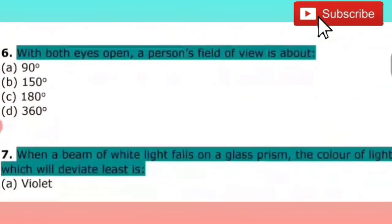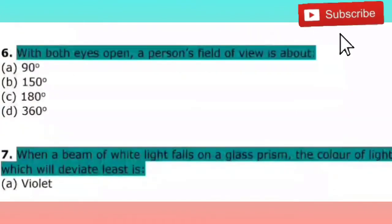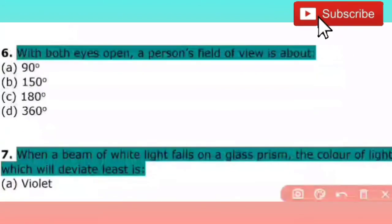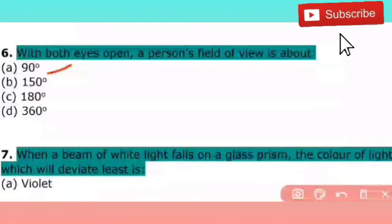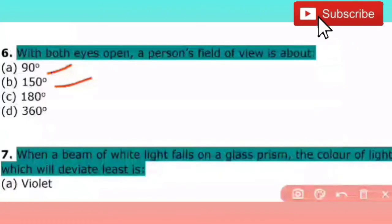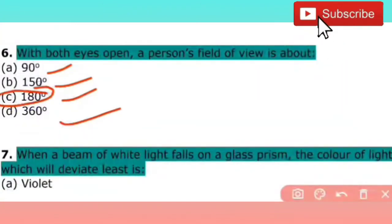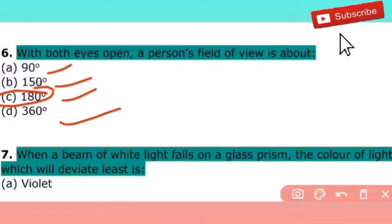The next question: with both eyes open, a person's field of view is above how many degrees? When both eyes are clear, the combined field of view is 180 degrees. So the right answer is 180 — C is the right answer.